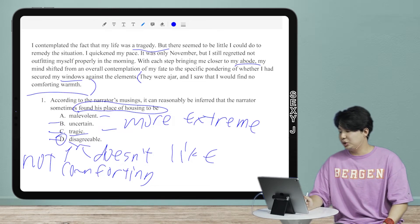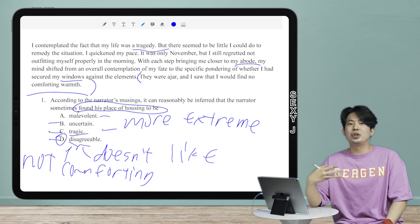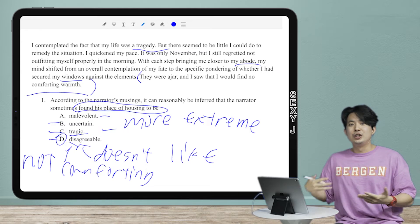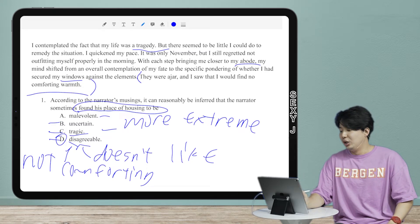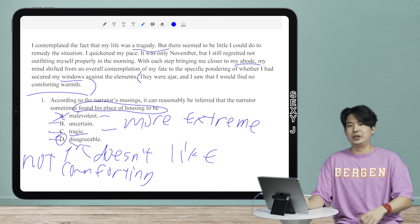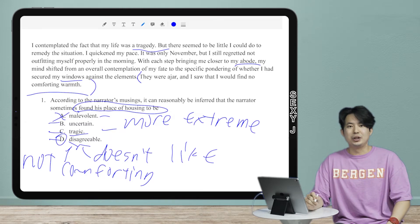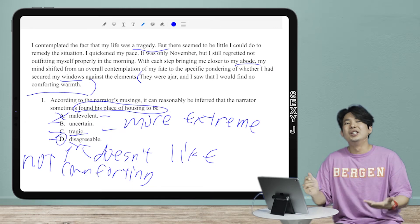Let's go through all the other answer choices, guys, because a lot of people on the narratives, they get the vague sense he doesn't like his house. So they just pick something that sounds bad. And they're like, oh, malevolent. That's awful. That's really bad. Malevolent is like evil, guys. Is this house going to be evil? Don't think so.